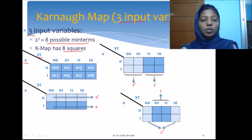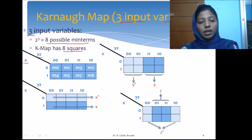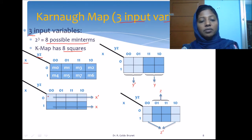So, m0 is adjacent to m4 because yz remains the same and the change is only in x. Similarly, m1 is adjacent to m5, m3 is adjacent to m7, and m2 is adjacent to m6. m3 is adjacent to m2, and so on in this row as well. When we group all 4 cells in a row together, y and z are varying while x remains the same.